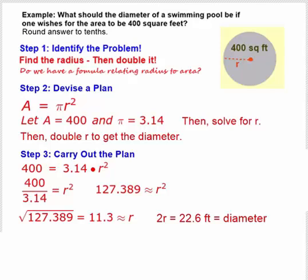So we carry out our plan. We let A equal 400, we let π equal 3.14, and we get the equation 400 = 3.14r².